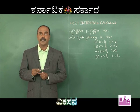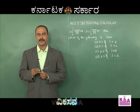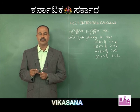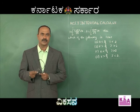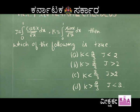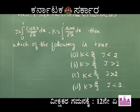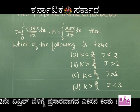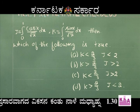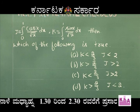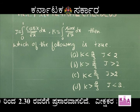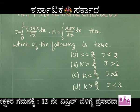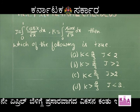Dear students, let us discuss the next set of problems based on integral calculus. Here I have taken a very beautiful and interesting problem, and you cannot use any shortcut here except using basics of mathematics. The problem is: J = ∫₀¹ cos(x)/√x dx, K = ∫₀¹ sin(x)/√x dx. Which of the following is true? Option A: K < 2/3, J < 2. Option B: K > 2/3, J > 2. Option C: K < 2/3, J > 2. Option D: K > 2/3, J < 2.